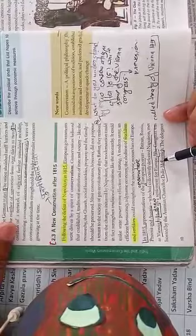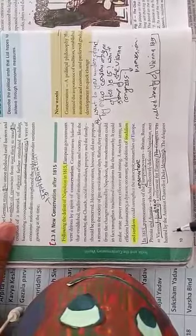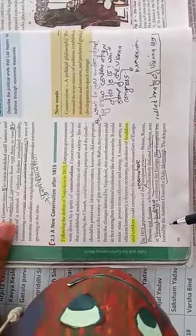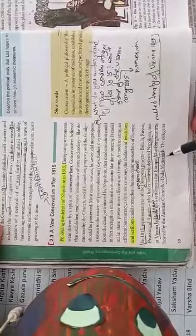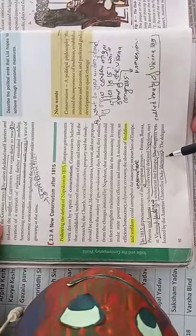The Congress was hosted by the Austrian Chancellor, Duke Metternich. Congress ki leadership ki gayi thi, host kiya gaya tha, netritva kiya gaya tha - Austrian Chancellor, Austria ke Chancellor jo ki Duke Metternich raja the, Duke Metternich ne kiya tha.